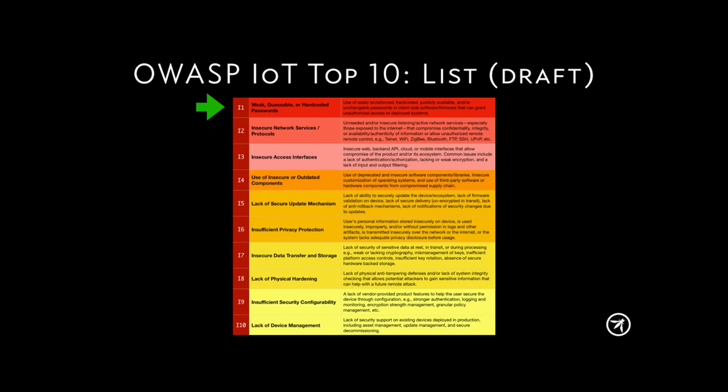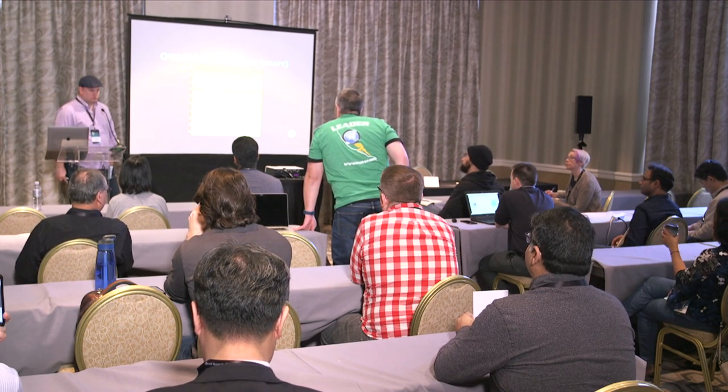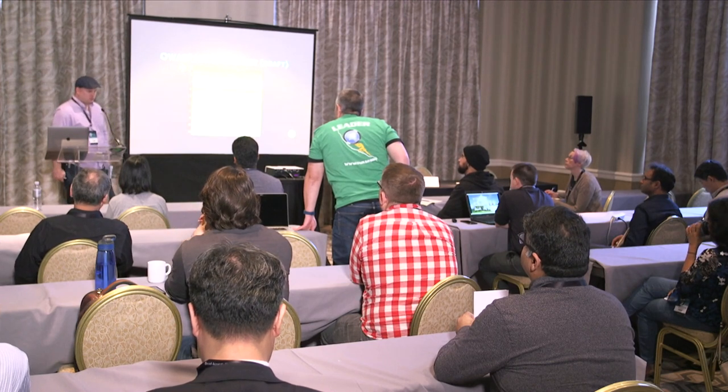So who doesn't like the password category — weak, guessable, and hard-coded — being number one? A participant responds: going through a similar exercise at their day job, they would put lack of secure update or any updatability as number one, because without the ability to update, you can't fix the rest over time. We'll never design a perfect anything from day one. So they're not saying passwords can't be number one, but they would bump inability to update higher on the list.